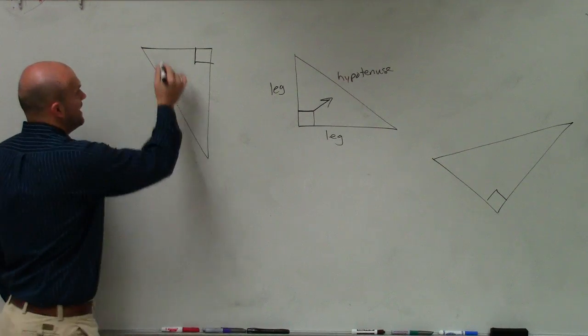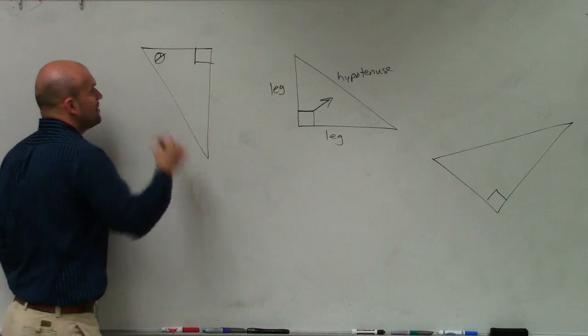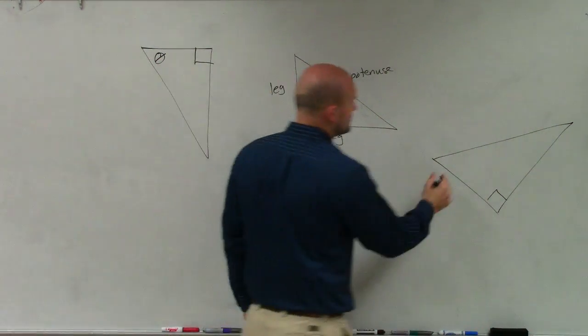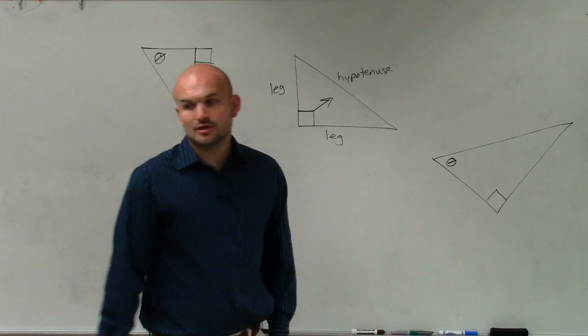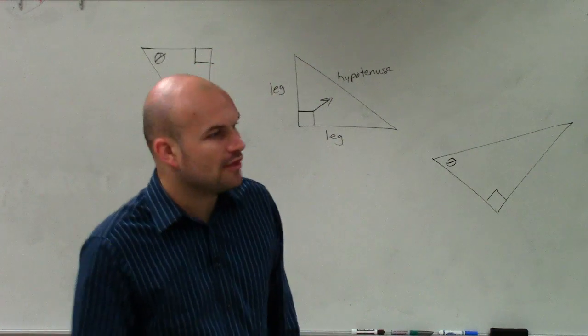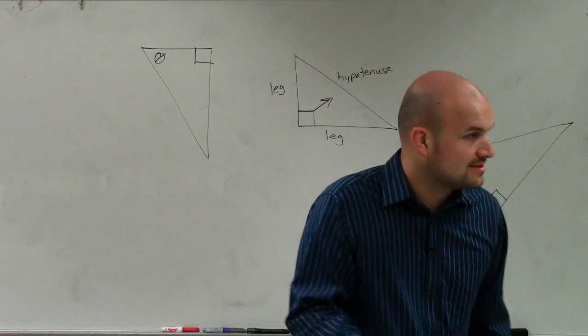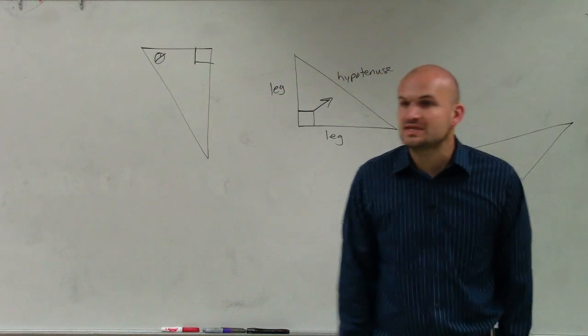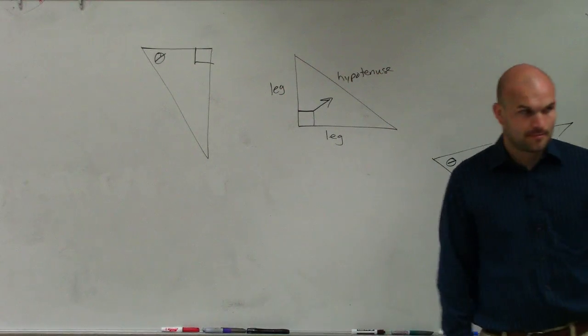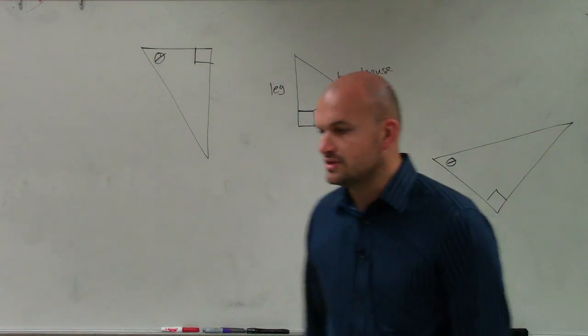So let's pretend we have an angle. And to represent that angle, we're going to use this little zero with a line through it, which we call theta. It's a variable. You can think of it as an x, but we're going to use theta for our trigonometry unit. It's a Greek symbol for us.